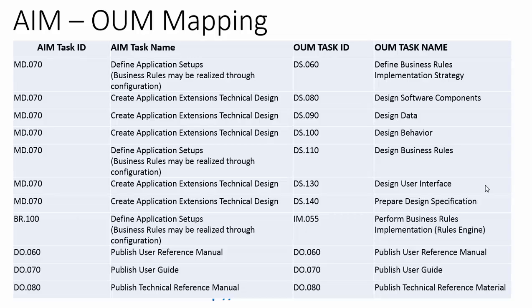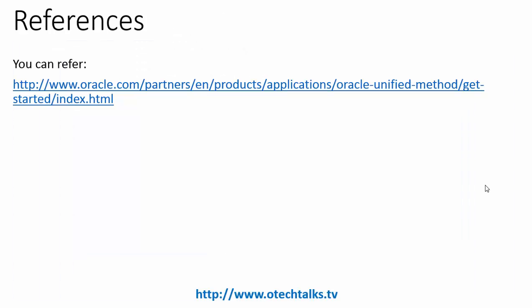MD50 documents — Create Application Extensions and Interface Function Design — map to multiple new documents: AN050, AN060, AN070, AN090, and AN100, covering Analyze Data, Analyze Behavior, Analyze Business Rules, Analyze User Interface, and Prepare Analysis Specification. MD70 (Define Application Setups) goes to DS060 (Define Business Rules Implementation Strategy). DO060 (Publish User Reference Manual) and DO080 (Publish Technical Reference Manual) are retained. Over 200 documents are available in OUM. For more details, refer to the Oracle Unified Methodology reference link.